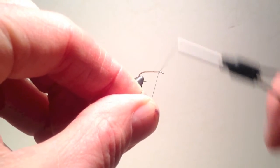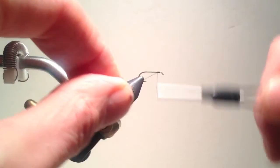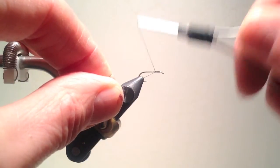I'm tying this beetle on a size 14 standard dry fly hook. Those of you that have seen my previous videos know that I like to leave a little bit of bare hook shank near the eye of the hook.